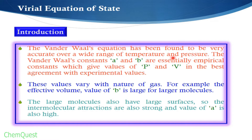The van der Waals equation has been found to be very accurate over a wide range of temperature and pressure. The van der Waals constants a and b are essentially empirical constants which give values of pressure and volume in best agreement with experimental values. We have studied these two constants in detail. The van der Waals equation was quite successful in describing the behavior of real gases.